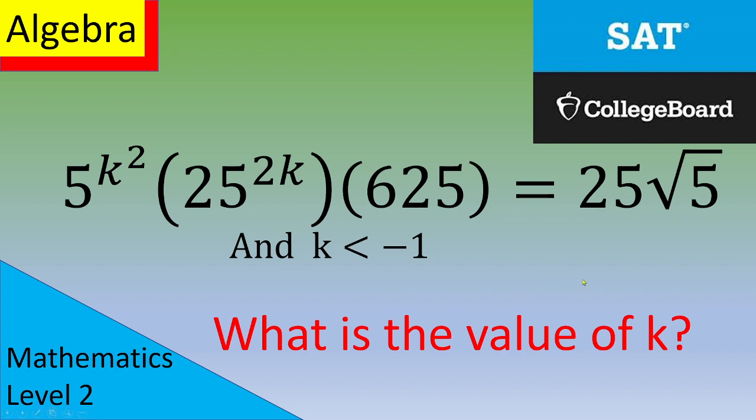You need to find out the value of k, such that 5^(k²) times 25^(2k) times 625 equals 25√5. And k is strictly below negative 1.